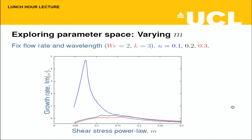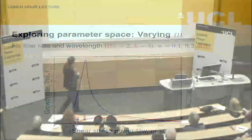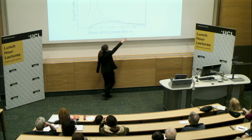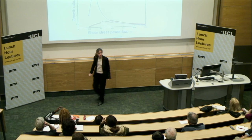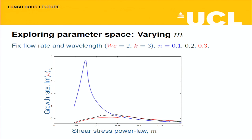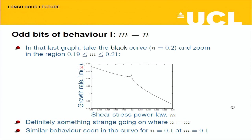Varying M while fixing N: at N=0.1, 0.2, and 0.3, instability is present for low M and stabilizes at higher M. There's a little notch in the curve at M=N for each case. Zooming in, there's something weird happening when M equals N that I haven't got to the bottom of, but it does explain why parameter continuation right through M=N was never going to work.